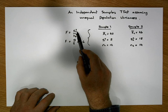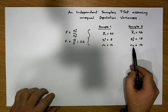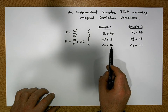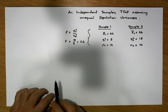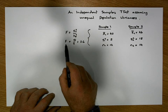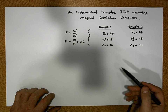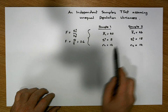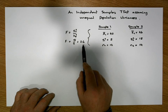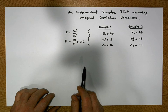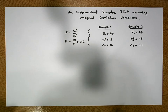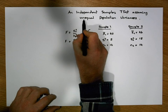The degrees of freedom for the numerator is n minus 1 = 13, and the degrees of freedom for the denominator is 12 minus 1 = 11. With 13 and 11 degrees of freedom, the critical value is 3.39, so the F-statistic of 3.6 falls into the rejection region. We therefore reject the null hypothesis of equal population variances in favor of the alternative that the population variances are unequal.